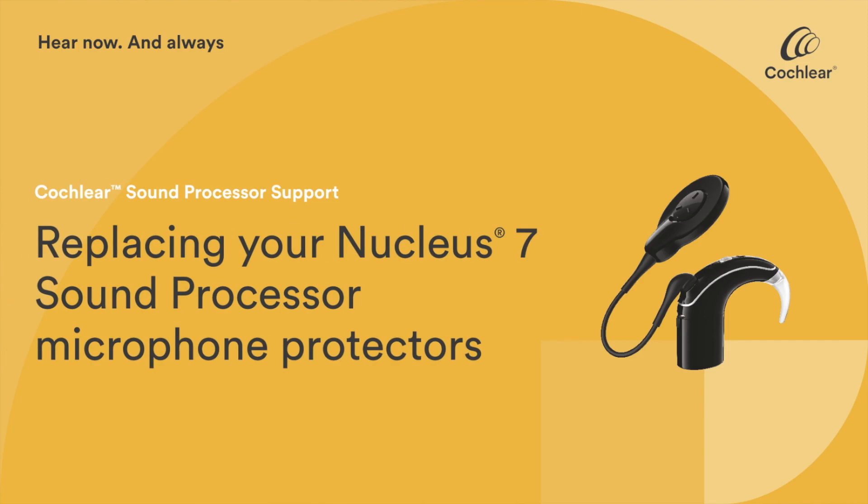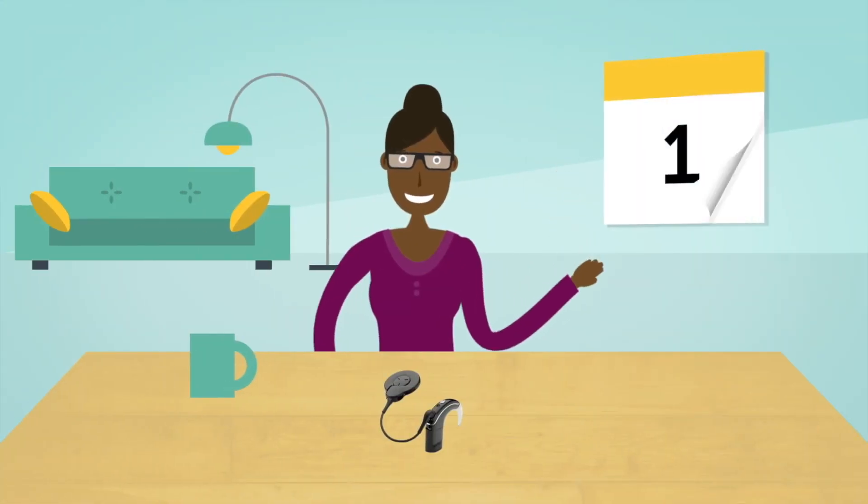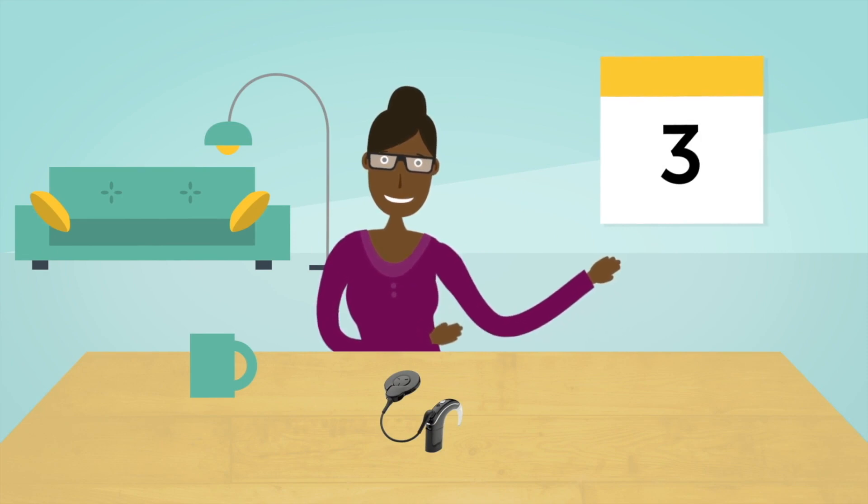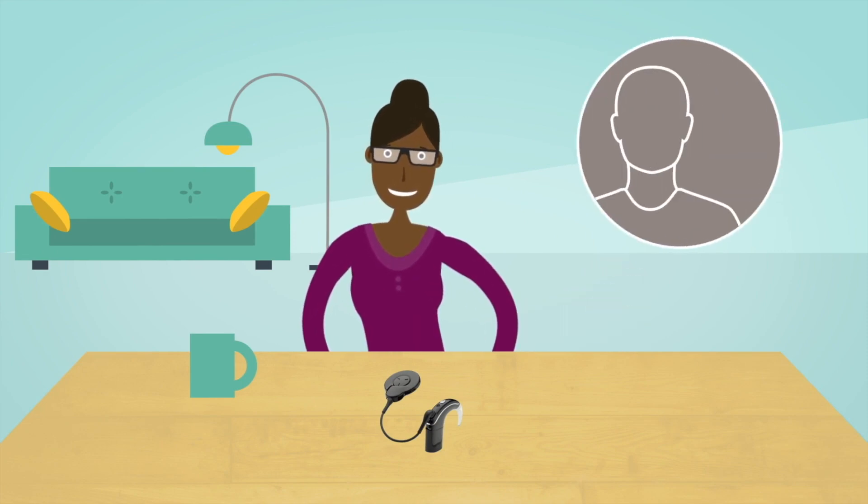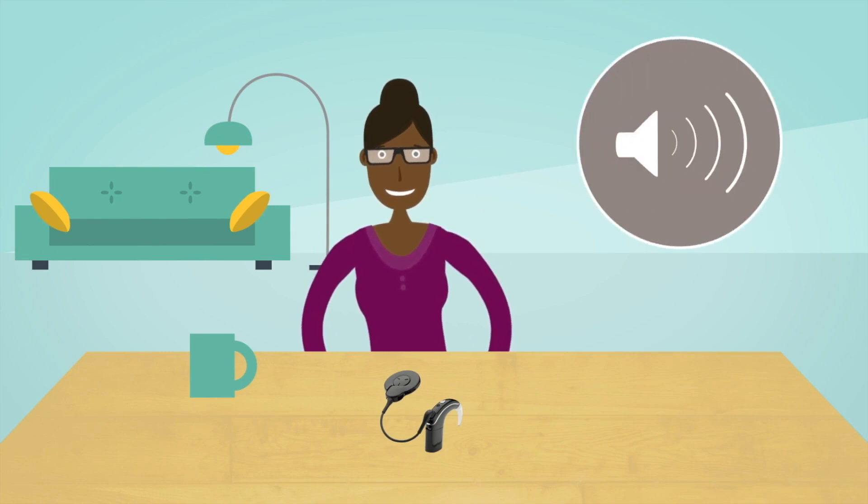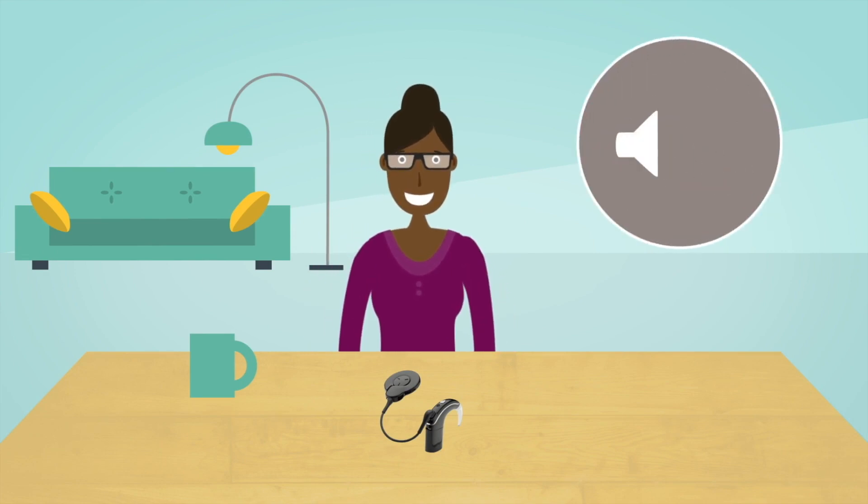You should replace your Cochlear Nucleus 7 sound processor's microphone protectors every three months or sooner if you live in a high humidity environment, perspire frequently, or notice degradation in sound quality.